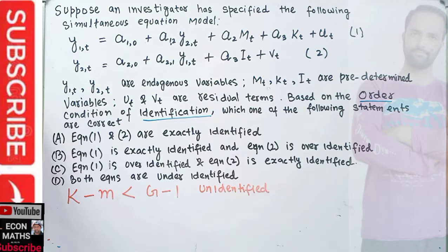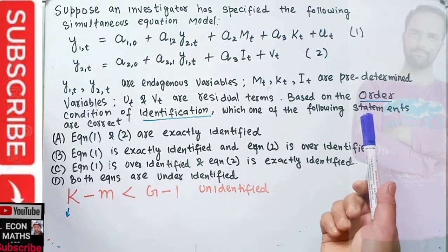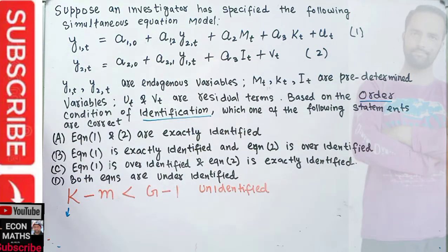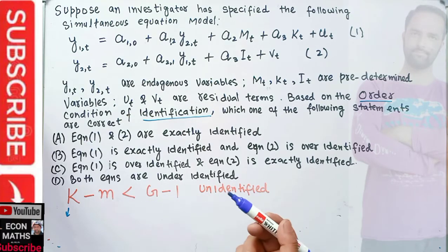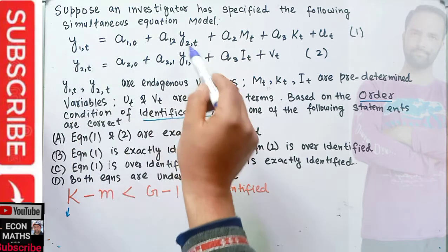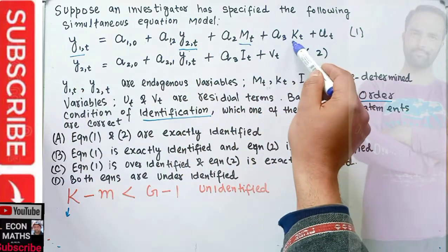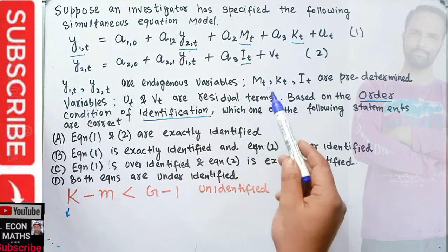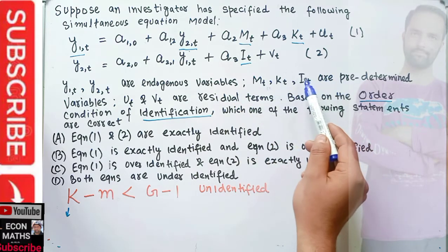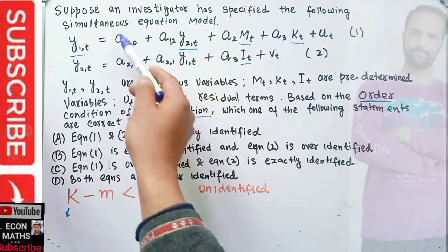Here, k denotes the total number of variables — both endogenous and predetermined — in the entire model. In our model we have: y1t, y2t as endogenous variables, and mt, kt, it as exogenous variables — that gives us five variables in total.